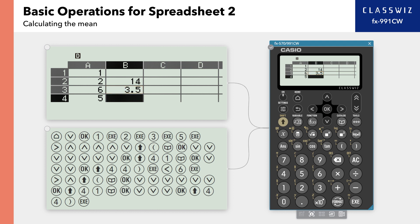If you change the value of cell A4 to 7, the total in cell B2 and mean in cell B3 also change.